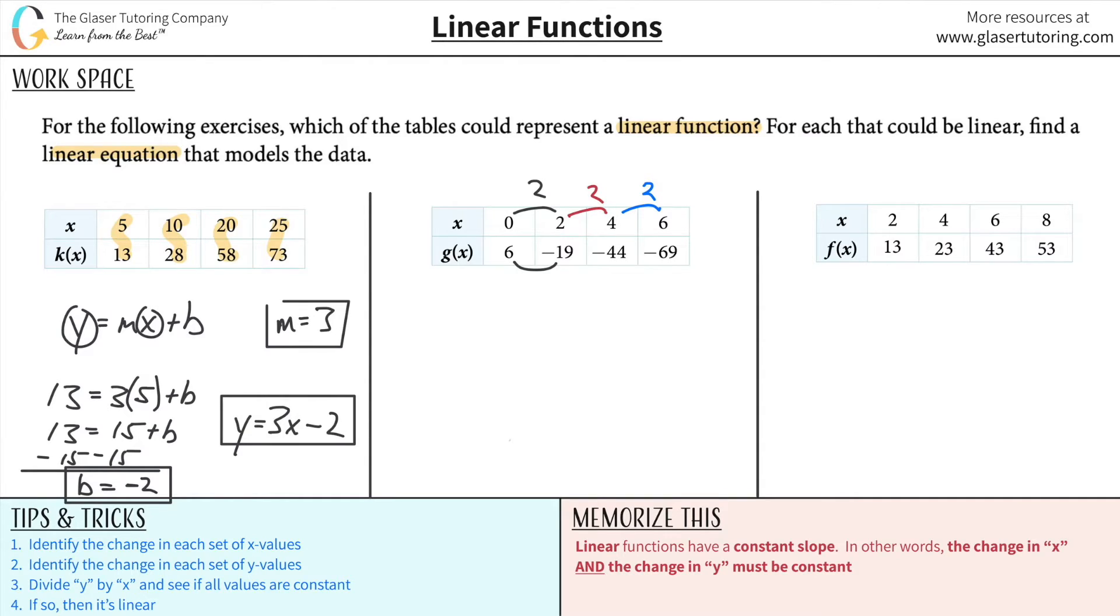What's the difference between these two? It looks like it's going to be negative 25. What's the change between these two? That also looks like it's going to be negative 25. And last but not least, that also looks like it's going to be negative 25. So since these are all constants, I know already that this is linear. However, since they want me to find the equation, I know I need to find the slope.